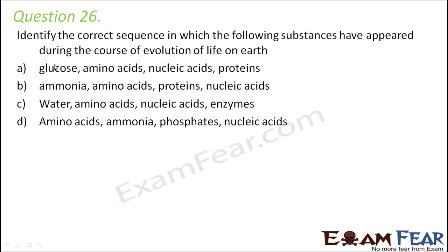Question number 26. Identify the correct sequence in which the following substances have appeared during the course of evolution of life on earth. Option A: glucose, amino acids, nucleic acids, proteins. Option B: ammonia, amino acids, proteins, nucleic acids. Option C: water, amino acids, nucleic acids, enzymes. Option D: amino acids, ammonia, phosphates, nucleic acids.